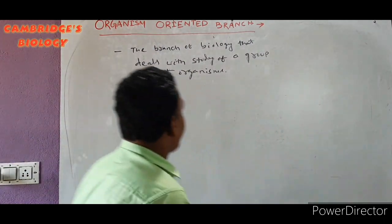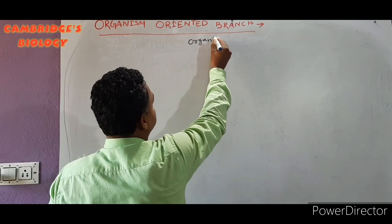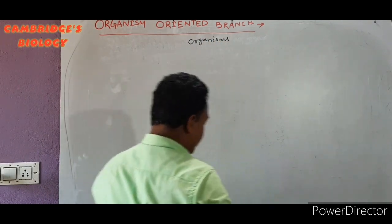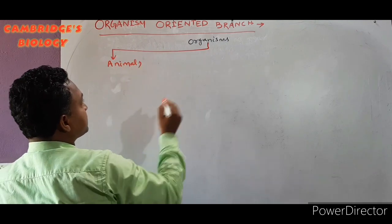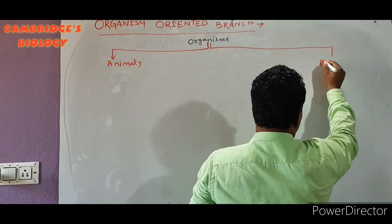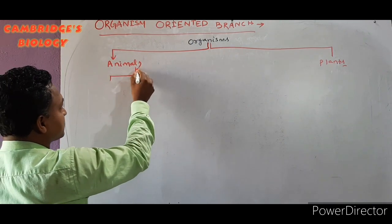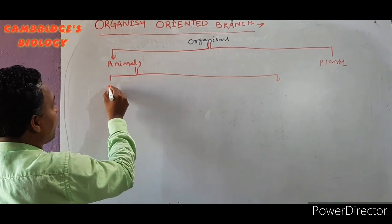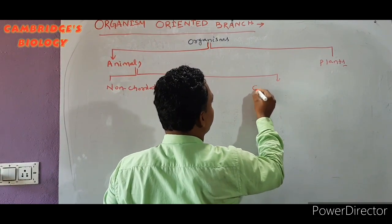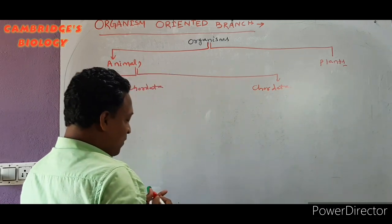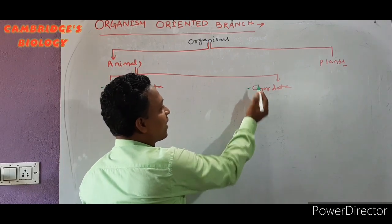Organisms are of two types. These organisms are basically divided into two parts: one is called Animals and the second one is called Plants. Animals are again of two types: one is called Non-Chordata and the second one is called Chordata.